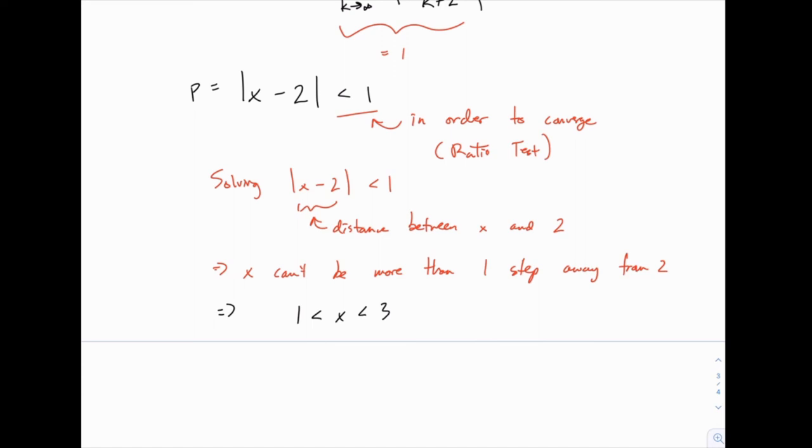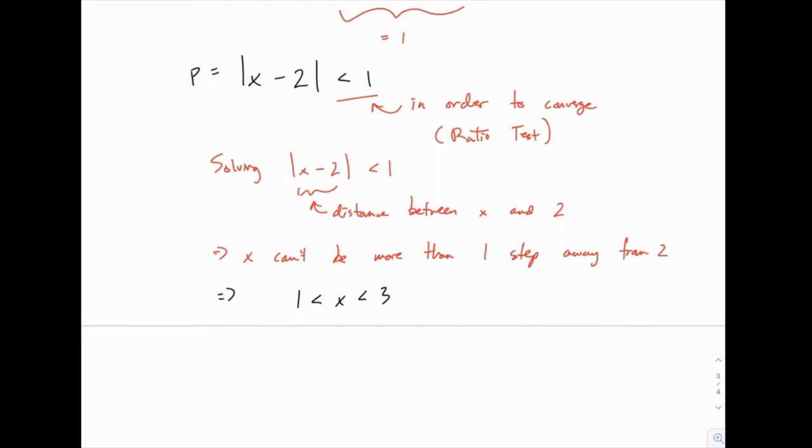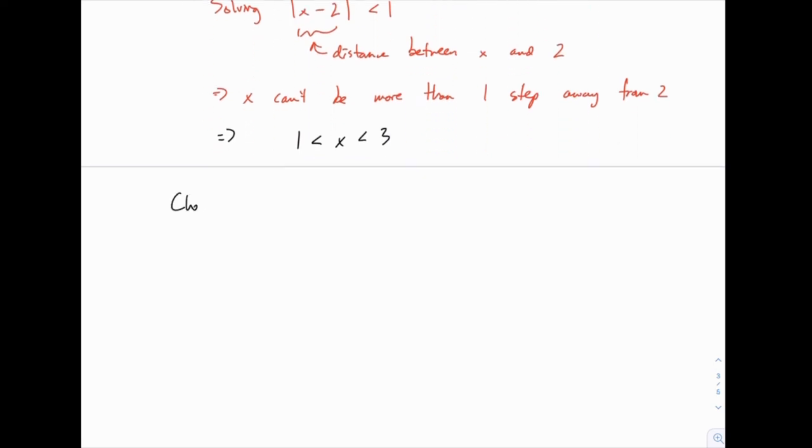So we found the interval of convergence except for the fact that we don't know what's happening at 1 and 3. So we know that between 1 and 3, this series converges. We know that below 1 or above 3, it diverges. We just don't know what happens exactly at 1 and at 3. So we need to check x equals 1 and x equals 3 individually.